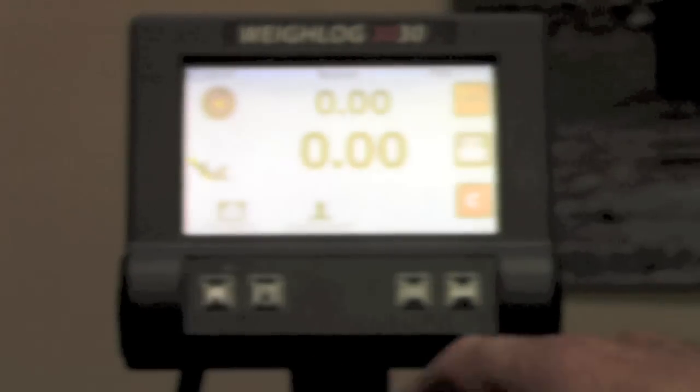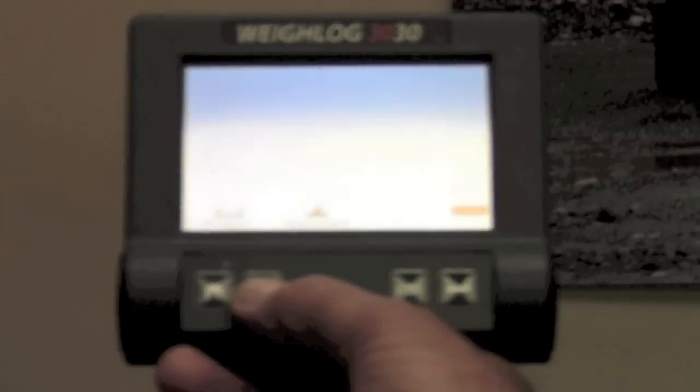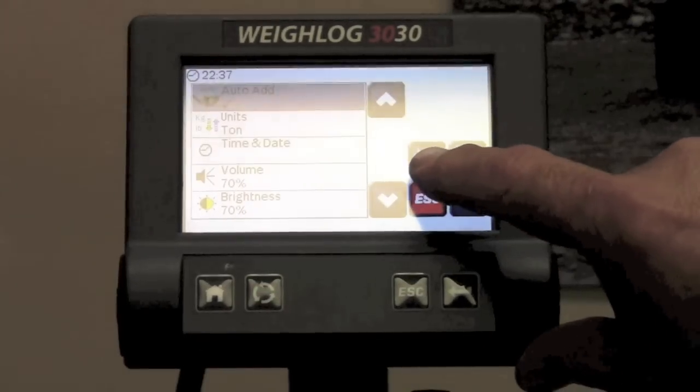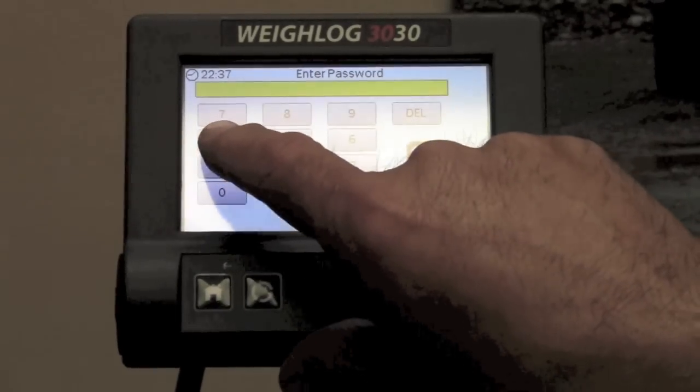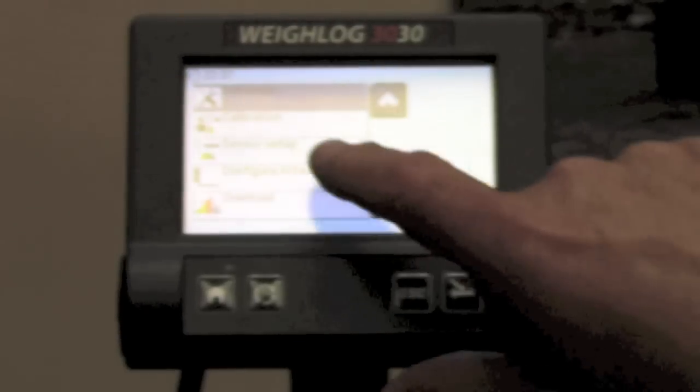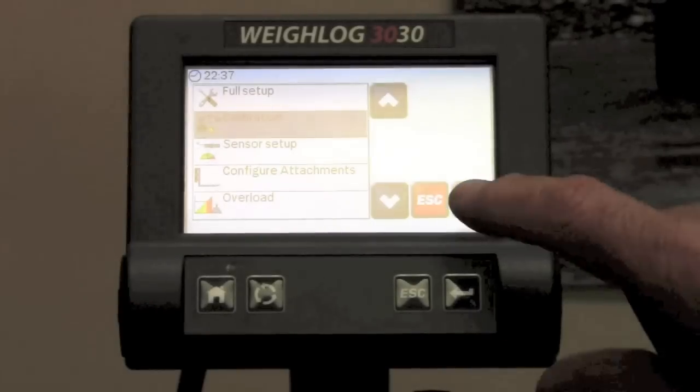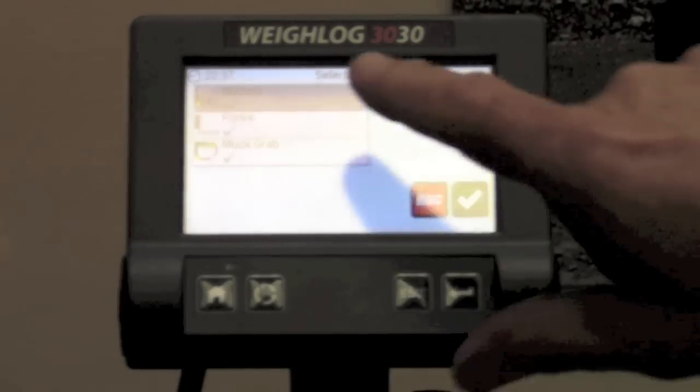We're going to press the pages key or turning key. We're going to go into the factory settings. We're going to enter the passcode which is 4084 and we're going to go to the calibration and hit the enter key.